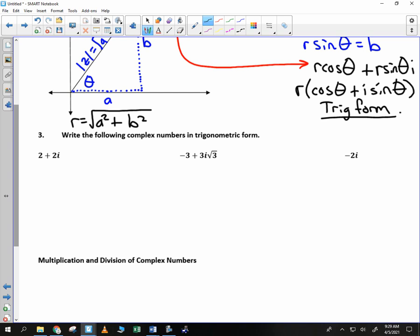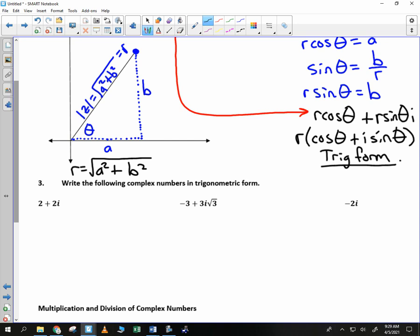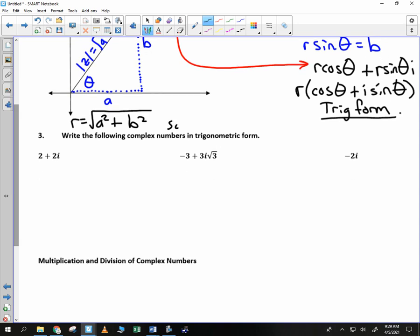The other thing that you need to be able to find is theta. In order to find theta, if you notice which trig function involves theta, a, and b, tangent, we solve tangent of theta equal to b divided by a. And that allows us to find those pieces.